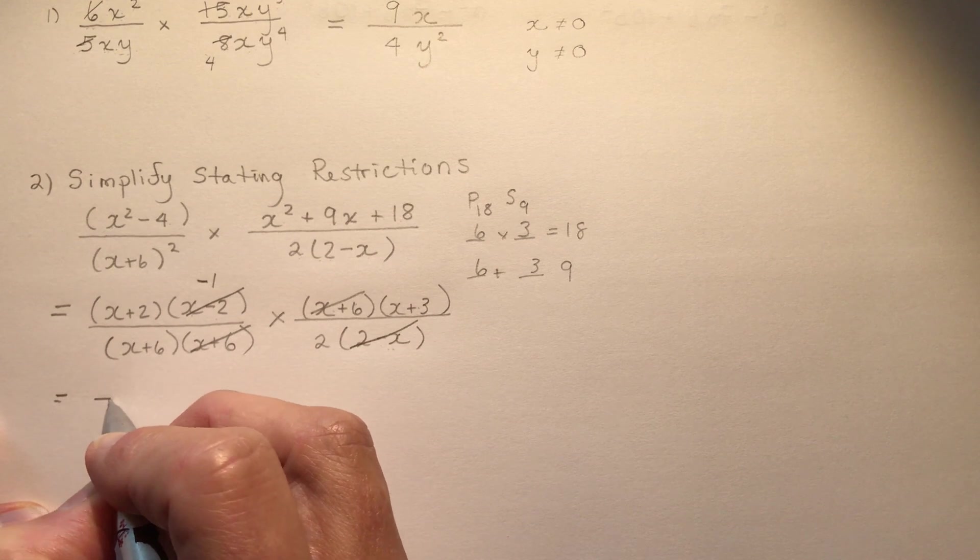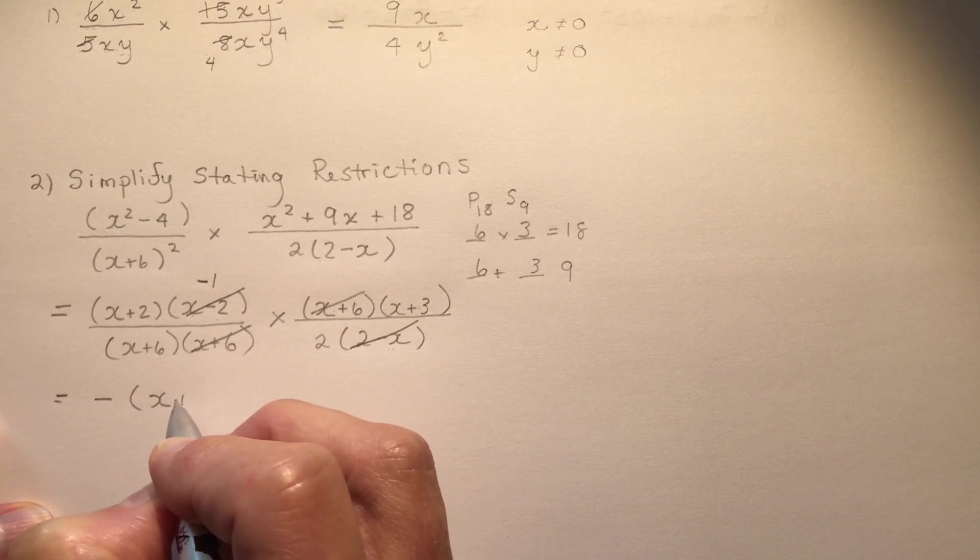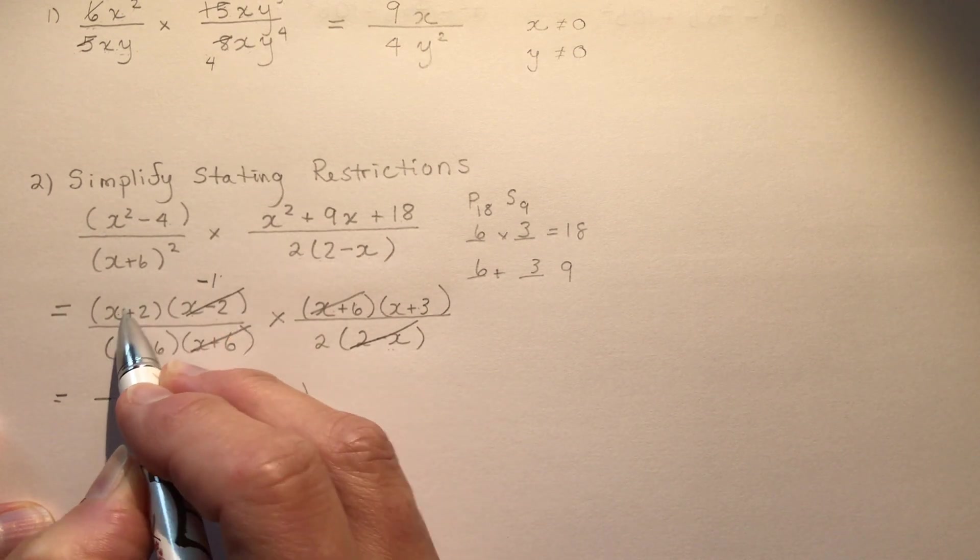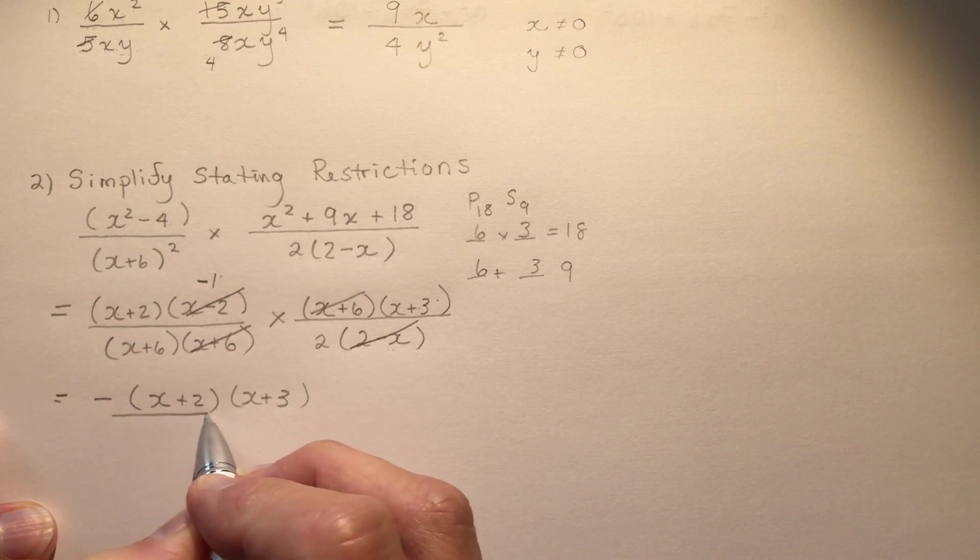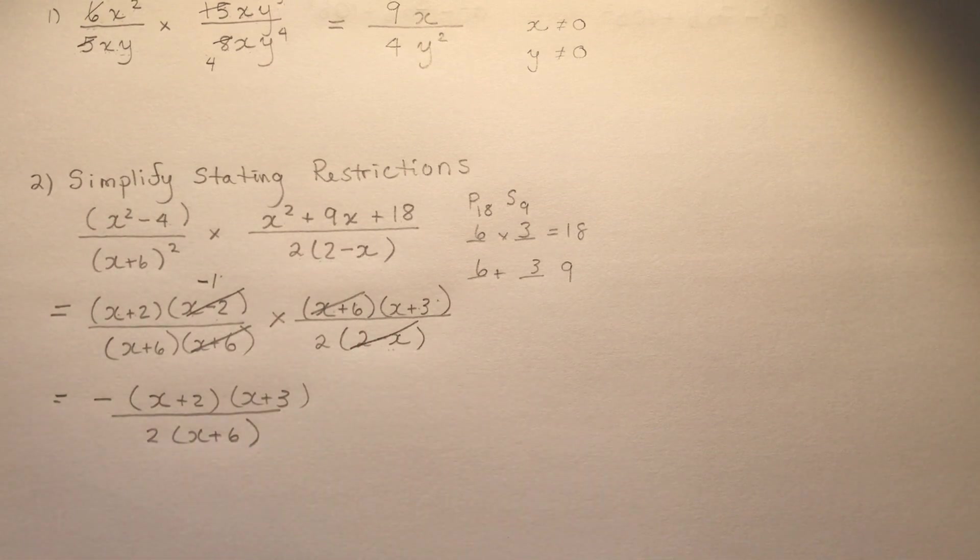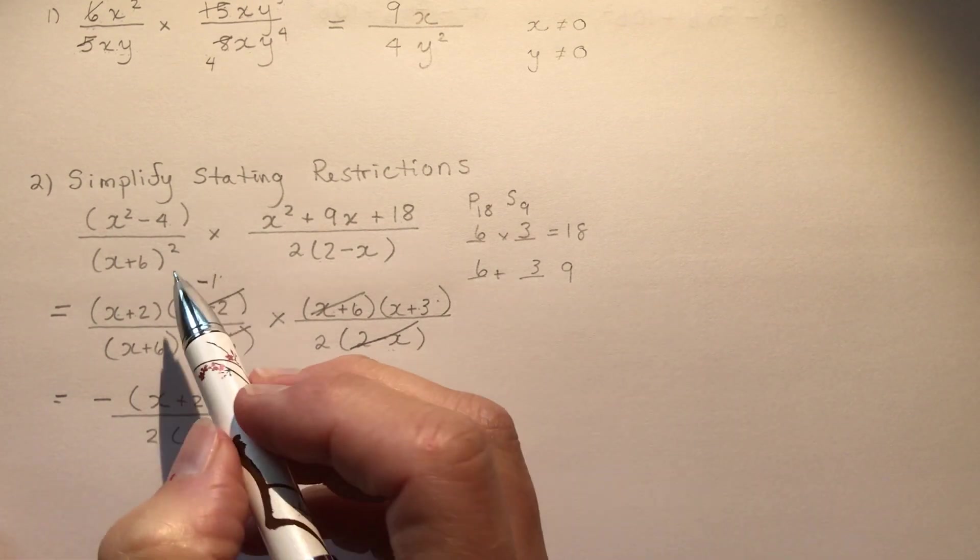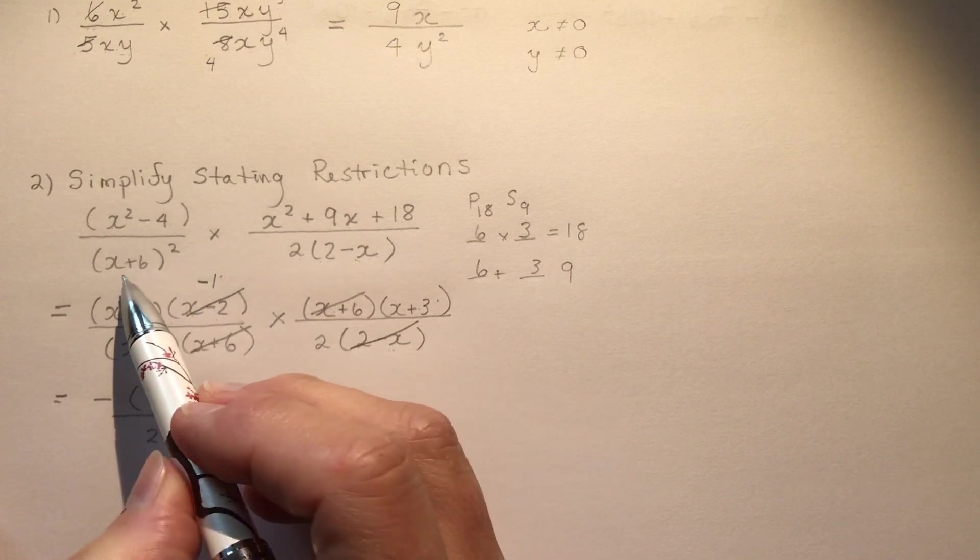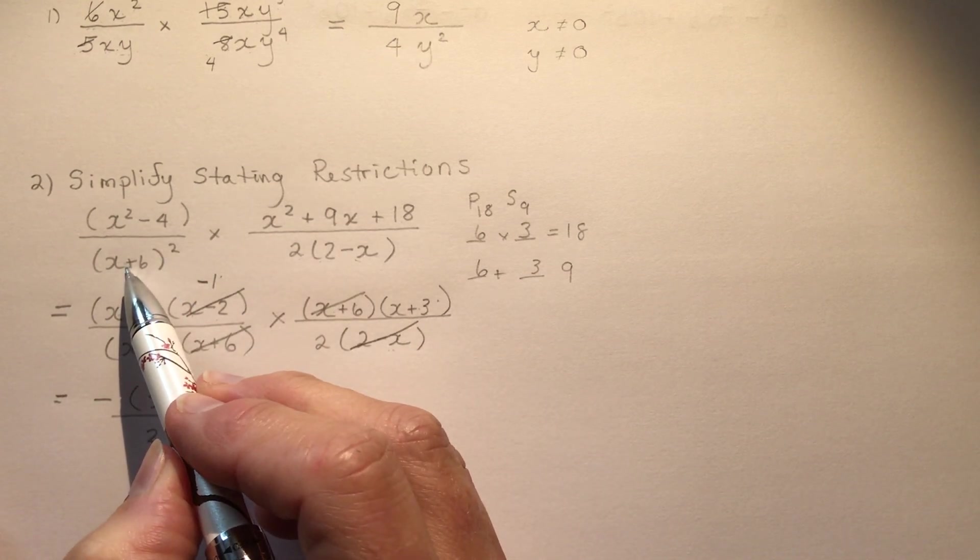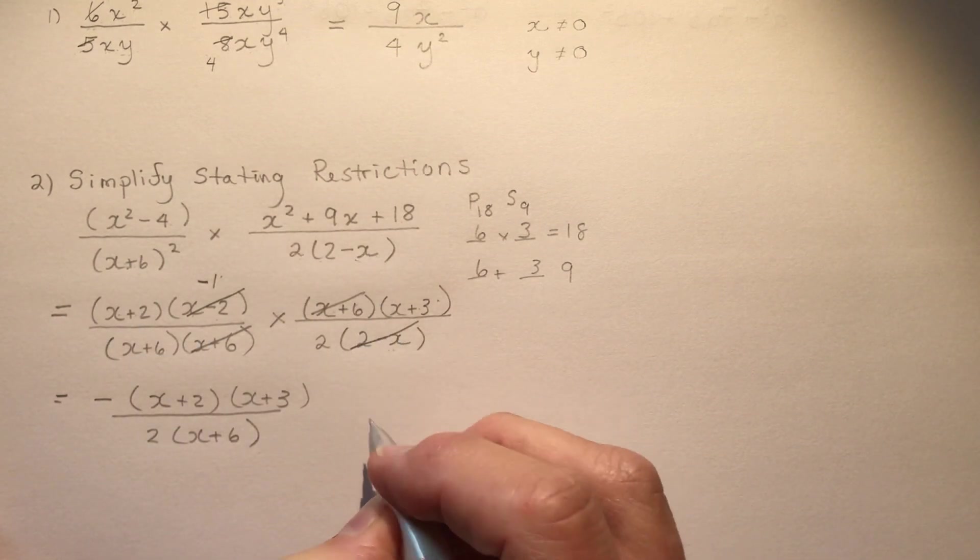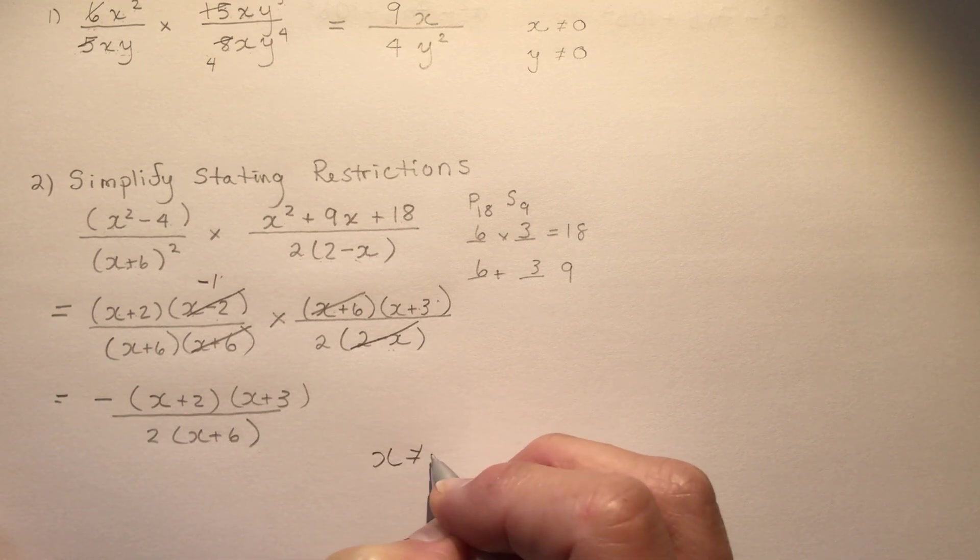Now I'm going to write out my final answer here. I have x plus 2 times x plus 3, just what's ever left over here, all over 2 times x plus 6. Now you also have to state the restrictions here. If you go back to where you have first factored, which would be here, I can see that this cannot be a negative 6 because negative 6 plus 6 is 0. This can't be a 2 because 2 minus 2 is 0. So x is not equal to negative 6 or positive 2.